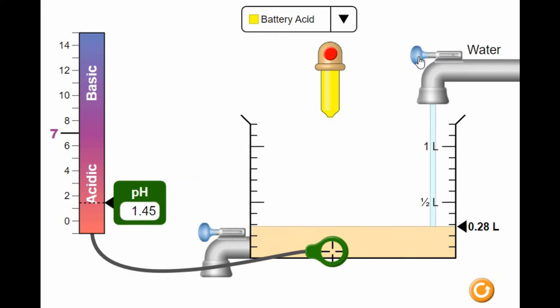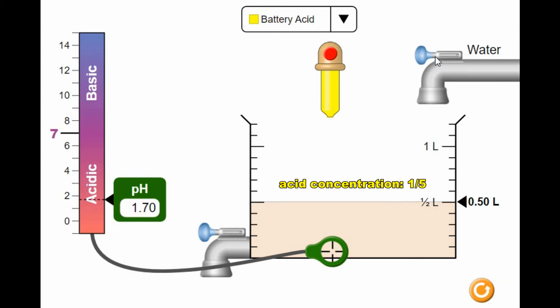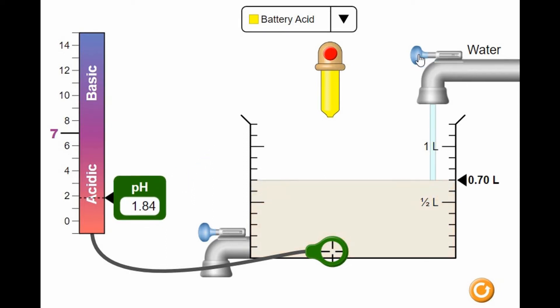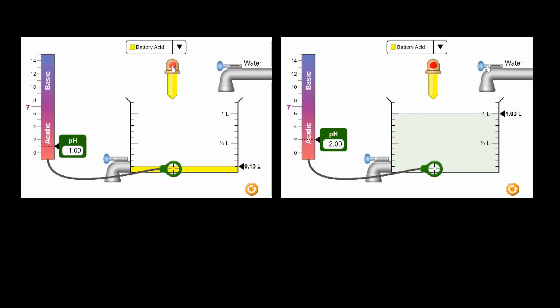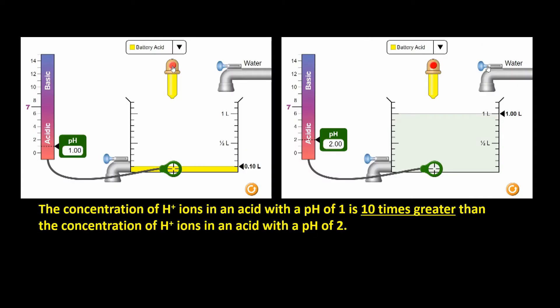If I add more water to get to 0.5 liters in the beaker, the acid concentration is now only one-fifth of what it was originally — four parts water and one part battery acid — but the pH is still only 1.7. If I add another half a liter of water so the acid's concentration is only one-tenth of what it was originally, the pH rises to 2. The concentration of H+ ions in an acid with a pH of 1 is 10 times greater than the concentration of H+ ions in an acid with a pH of 2.